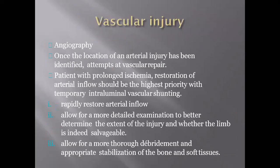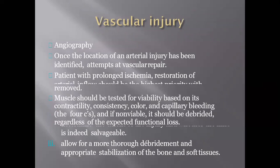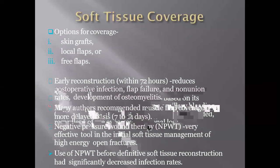Whenever vascular injury is suspected, we have to take a CT angiogram and identify the site of the lesion; immediately we have to do vascular repair. Whenever planning for vascular repair, we have to do fasciotomy as well. Regarding soft tissue coverage, when the wound is clean and skin and soft tissue loss is minimal, we can go for early reconstruction — applying split skin graft within 5 to 7 days. If skin and soft tissue loss is more, we have to wait until the wound becomes clean and granulating, then go for flap cover, which usually takes a minimum of 2 weeks.